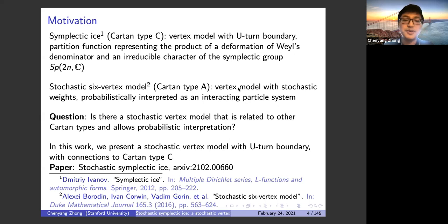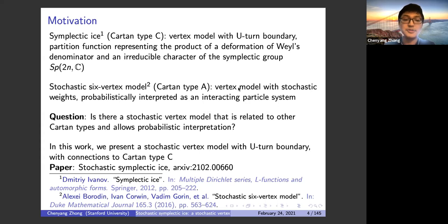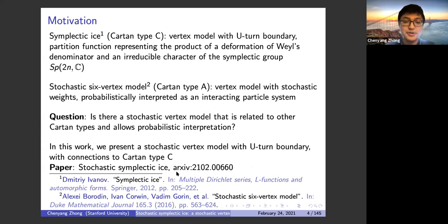A natural question is: for other Cartan types, are there also stochastic vertex models that give a probabilistic interpretation? If such models can be introduced, we can ask similar probability questions. This work is an attempt to answer that question. Specifically, we present a stochastic vertex model with a U-turn right boundary related to Cartan type C, with a probability interpretation.